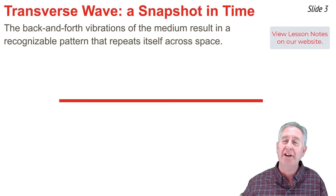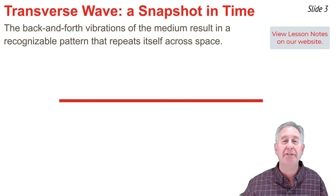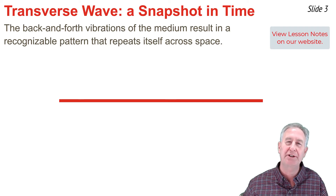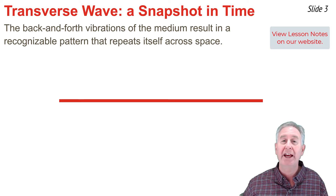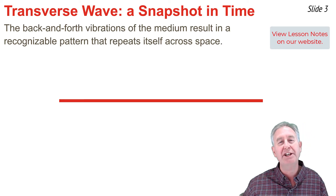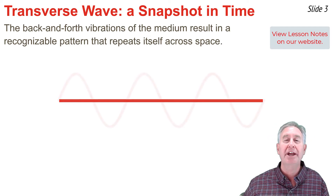As a transverse wave moves through a medium, particles of the medium vibrate back and forth in a direction that's perpendicular to the direction that the wave is moving. As particles vibrate back and forth about their fixed position, a recognizable sine wave pattern is produced within the medium.